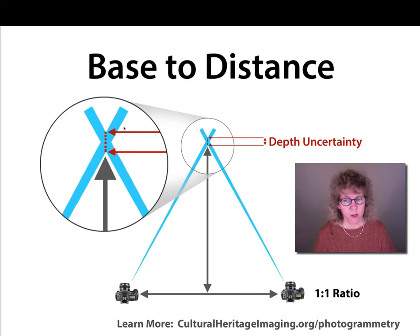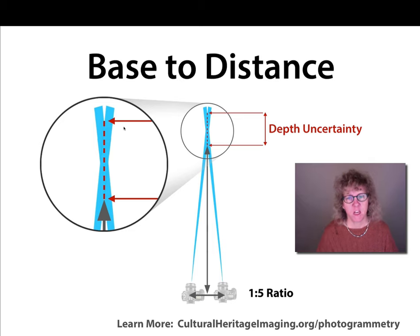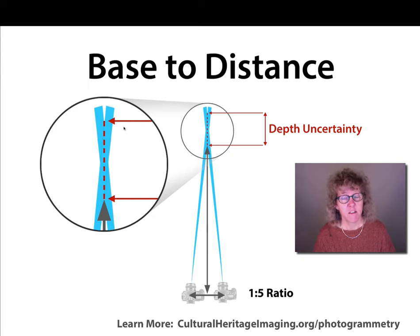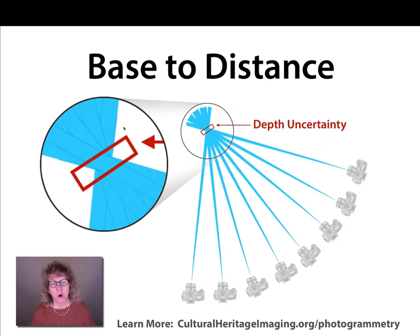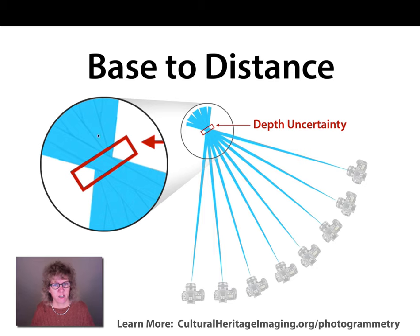If we have a one-to-one ratio with a wide-angle lens, we have low depth uncertainty. If we have a one-to-five ratio, which is with a 60-millimeter lens, then we increase the depth uncertainty for where a point might land on the surface. But if we're going around a subject, or if our camera is fixed and the subject is on a turntable, we're also reducing depth uncertainty by limiting the number of places a pixel could land on the surface as the camera angles move around it.